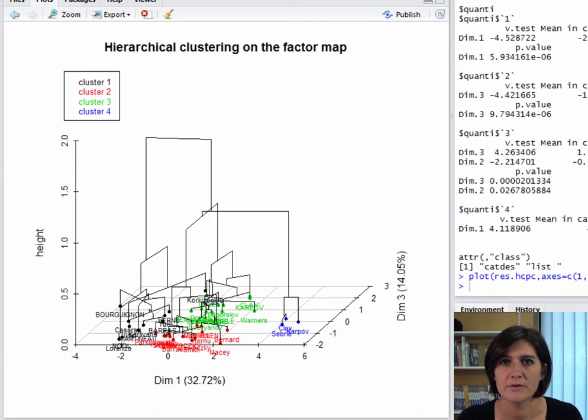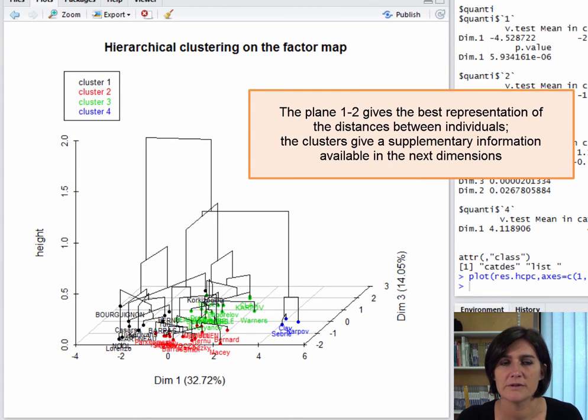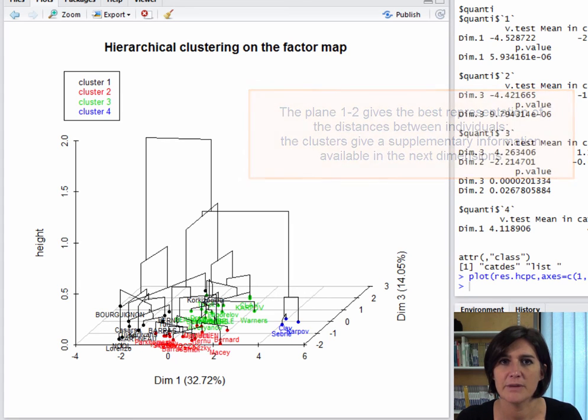Let's now stop for a moment to take note of something. The plane defined by the first and second dimensions gives the best visual idea of the distances between individuals. But if we add the colors corresponding to which classes they are in, we can see that there is a separation between green class and red class individuals. Therefore, the clustering helps us to see what is happening in the third and fourth dimensions. Overall, this means we get an optimal impression of distances via the PCA plane, which is enriched by the clustering indicated by the colors.